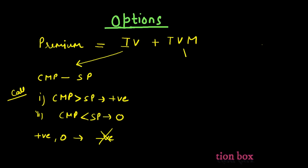Now coming to the time value of money. Time value of money is basically the risk premium which is charged by the option seller to the option buyer for the risk that he is taking. Due to the time left in option expiry, the stock or index can take any value, and in that case the option seller may have to bear huge losses.